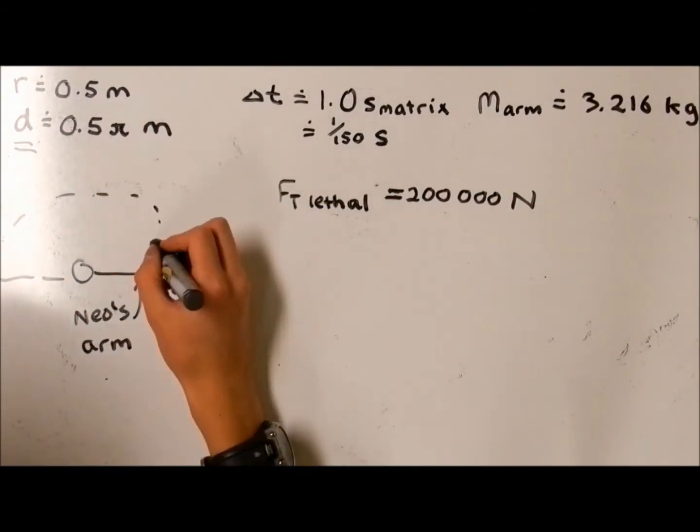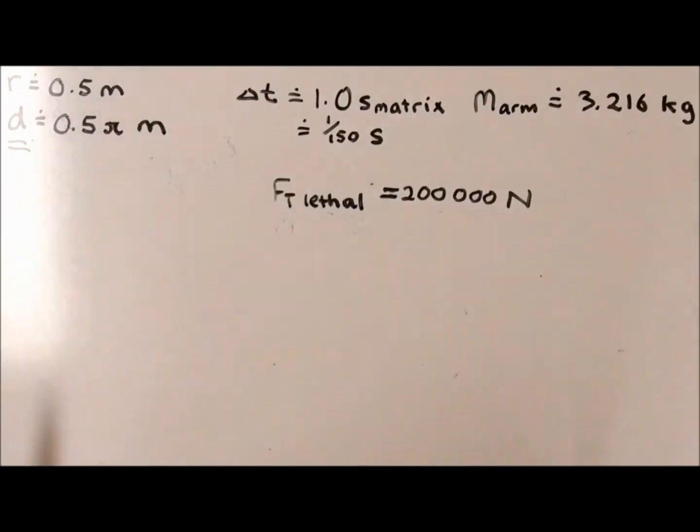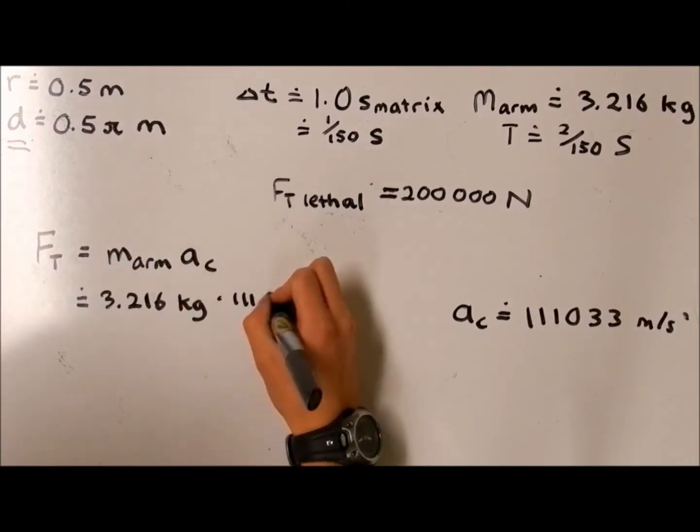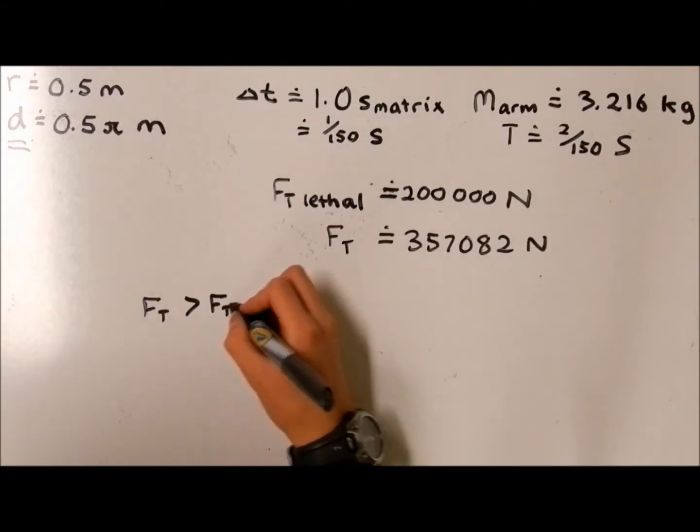Neo's arm also experiences a force of tension resulting from centripetal acceleration, which is around 100,000 meters per second squared. This amounts to approximately 360,000 newtons, which means that Neo's arm would fly off. Therefore, this stunt is impossible.